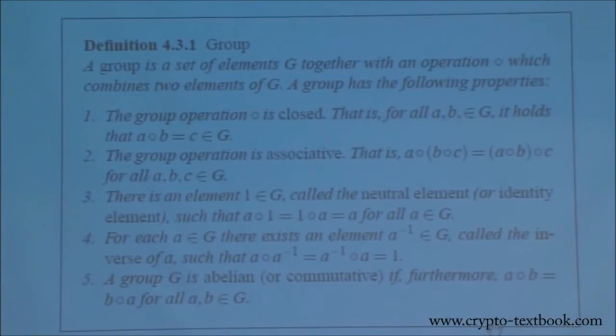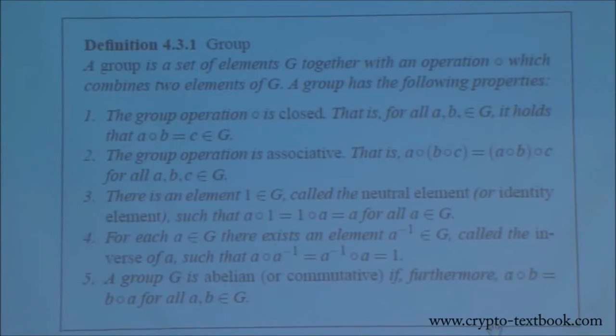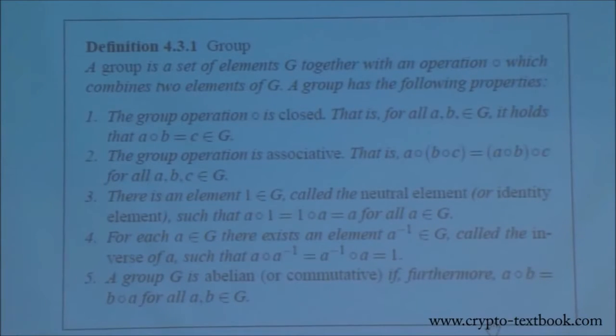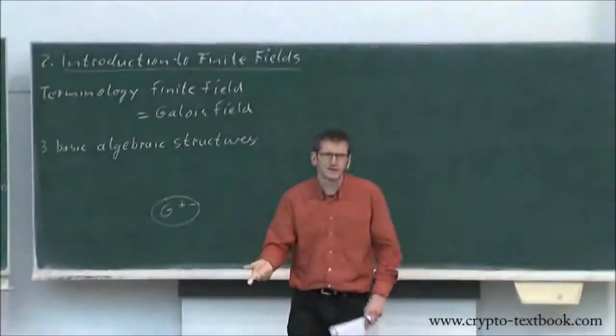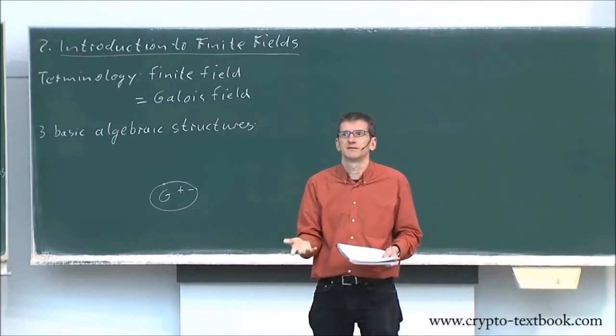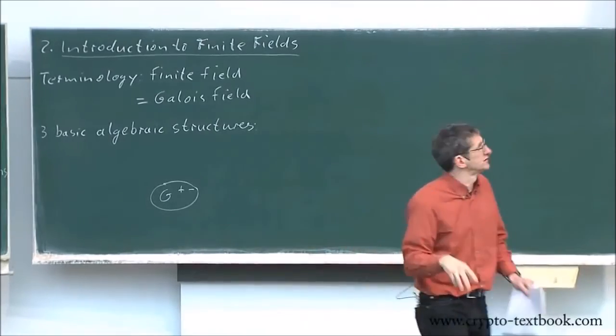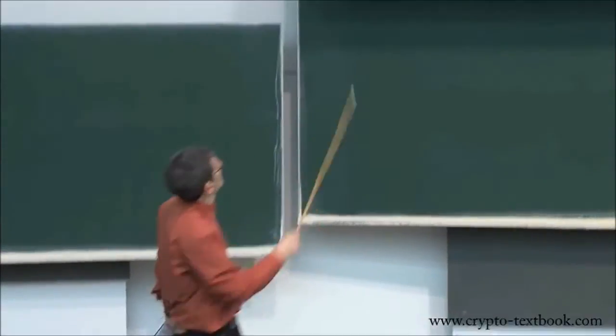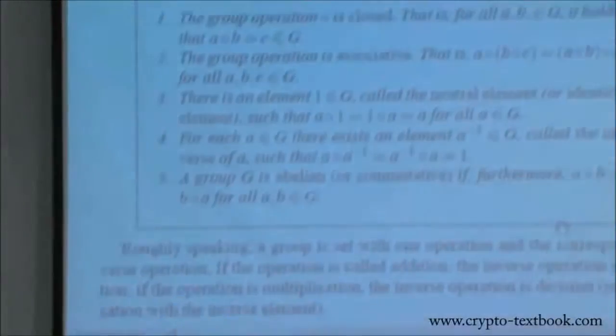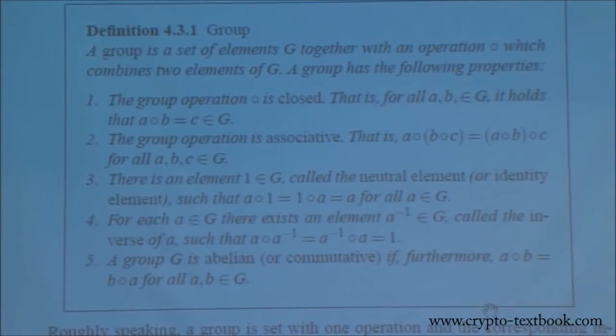The simplest—we did formally introduce a ring—and a group is an even simpler structure. Very roughly speaking, a group is a set of elements with two operations, really with one operation plus, but then you always have the inverse operation which is minus, and certain types of rules. In particular, rule number one: the operation is closed. Rule number two: the operation is associative, so it doesn't matter in which sequence you do the operation.